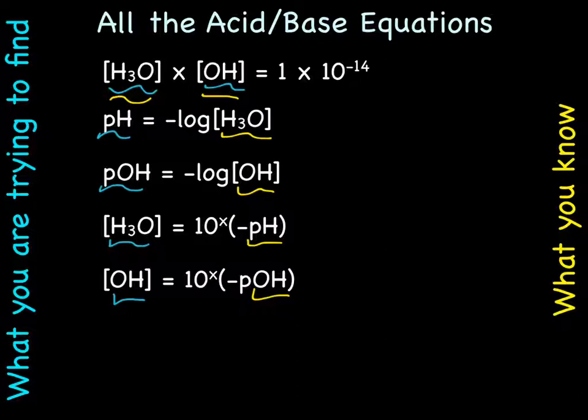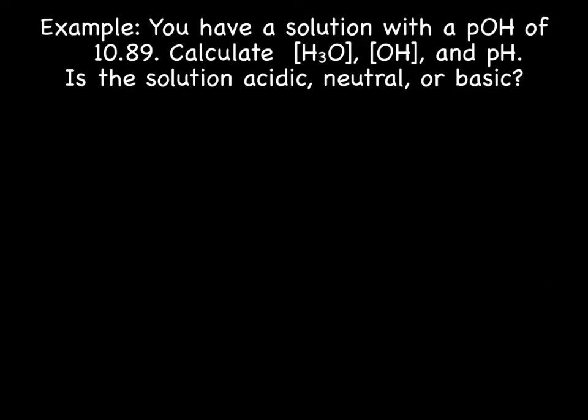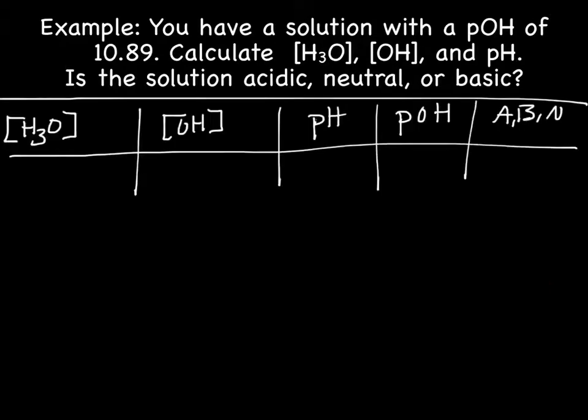So now let's try a quick practice problem. For example, you have a solution with a pOH of 10.89. Calculate the concentration of H3O, OH, and pH. Is the solution acidic, basic, or neutral? And I jotted down our data table. For me, I find it the best way to keep track of what I'm doing. So what they've given us is our pOH, which is 10.89.